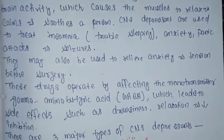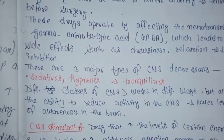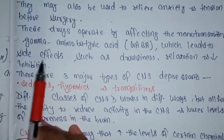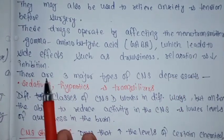These drugs operate by affecting the neurotransmitter gamma-aminobutyric acid (GABA), which leads to side effects such as drowsiness, relaxation, and decreased inhibition.